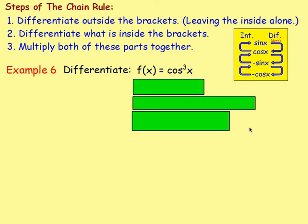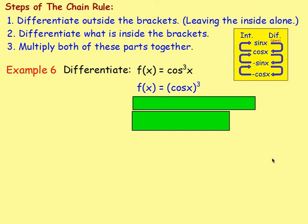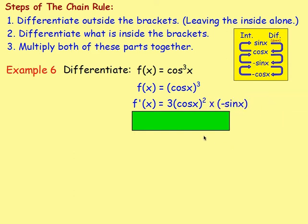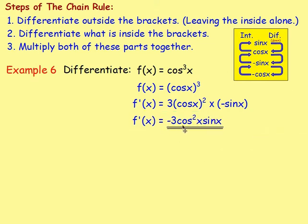The first thing you want to do is rewrite it: cos cubed x means (cos x) all cubed. Once you've got the brackets and the trig terms, think about the chain rule. Differentiate outside the brackets: the 3 comes down, leave the brackets as they are, and decrease the power by 1. Then differentiate inside: cos goes to negative sine x, so you multiply by negative sine x. That gives negative 3 cos² x times sine x — move the negative to the front, and that would be your answer.